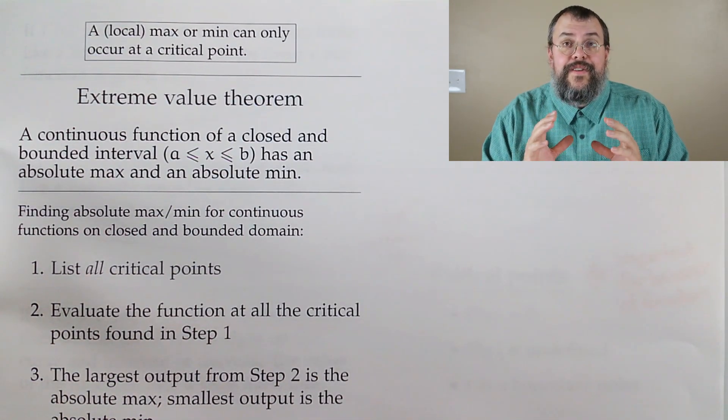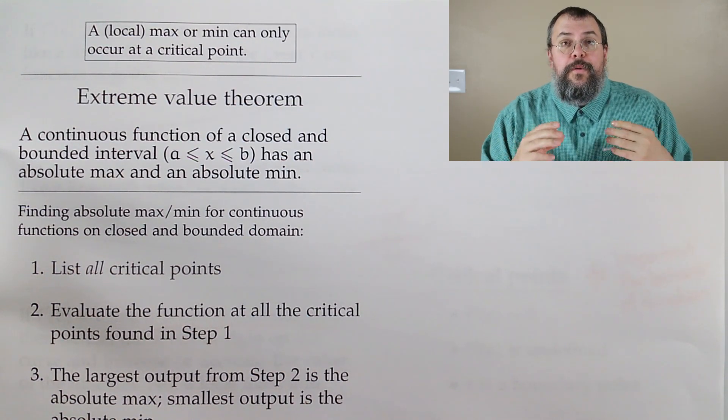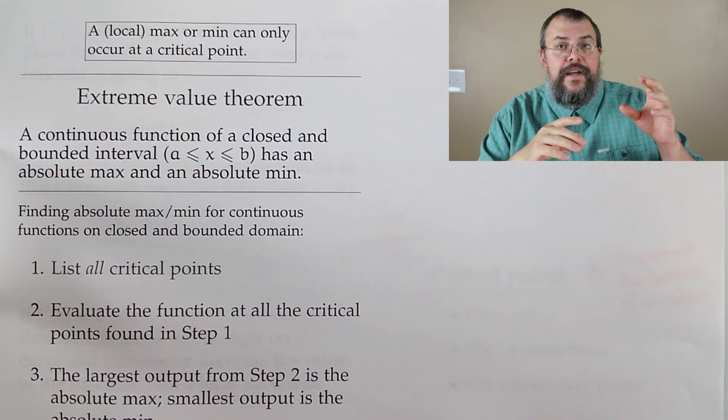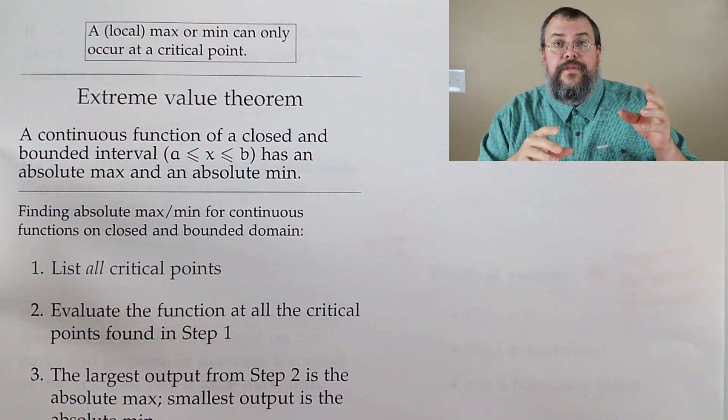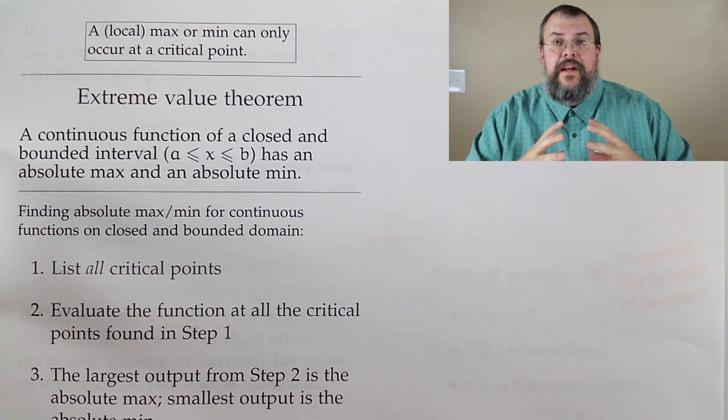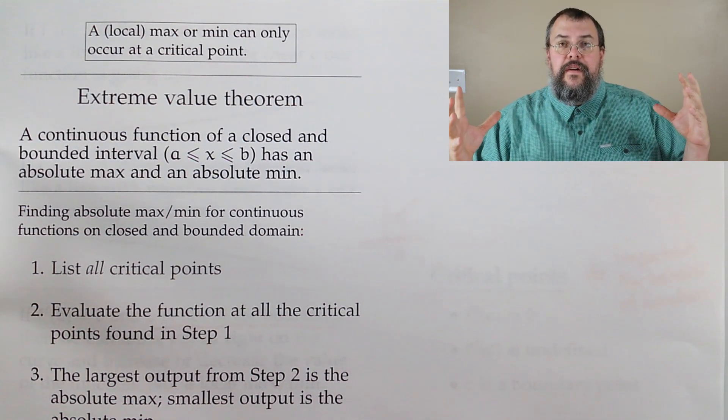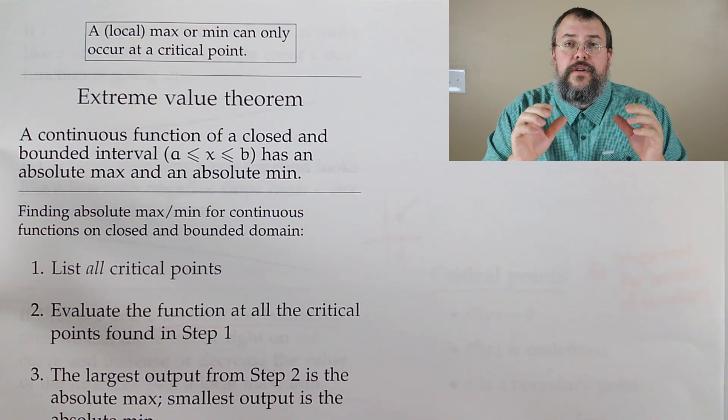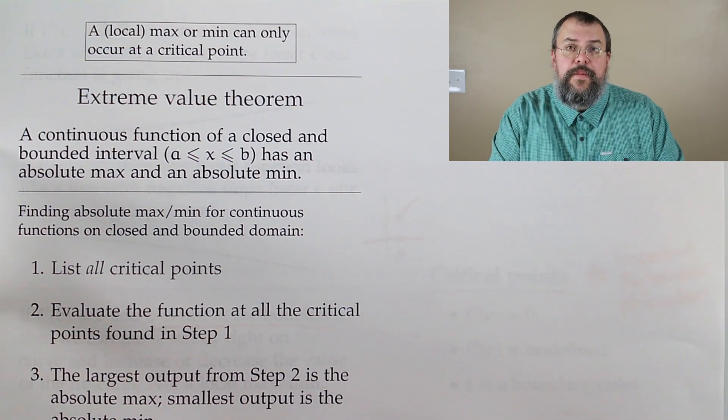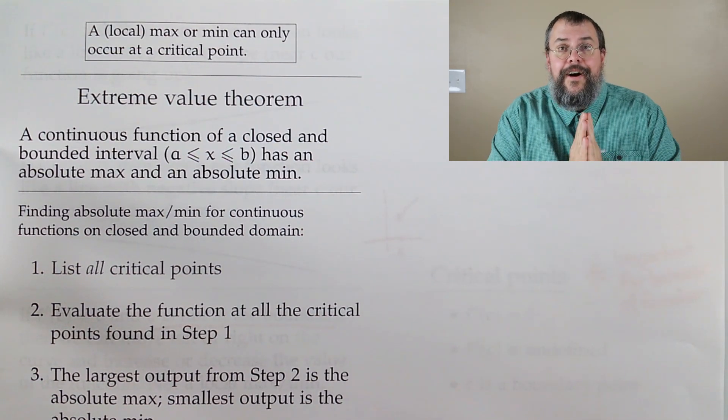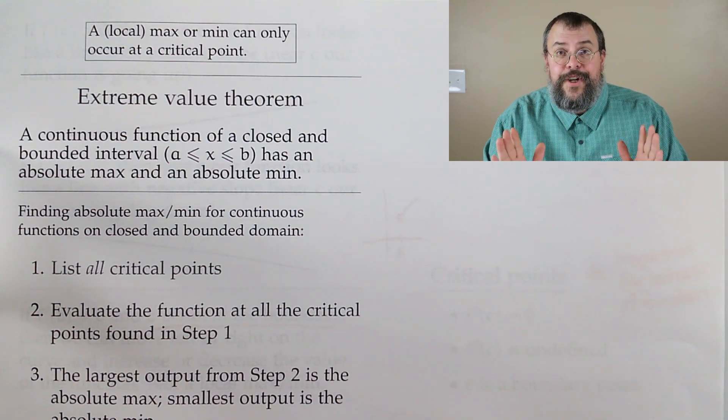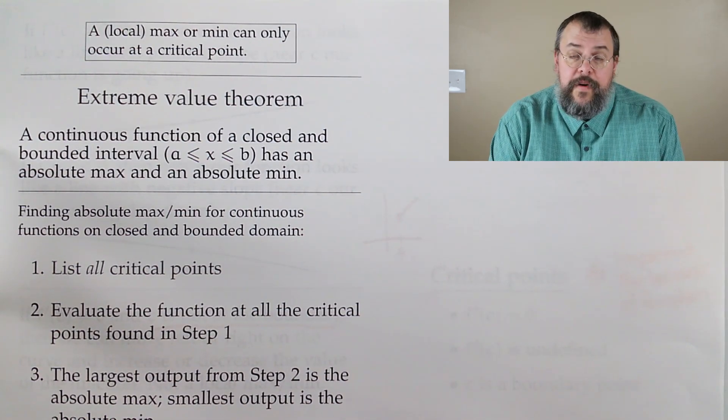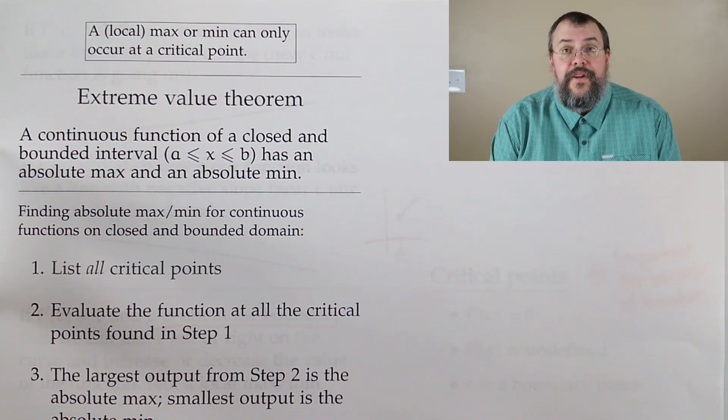We have the following simple observation, and that is a local max or min can only occur at a critical point. If I'm looking for maxes and mins, and we will be, the way we do it is we say, let's start looking for critical points. Do we have a boundary? Throw those in. Do we have any places where the derivative is undefined or the derivative is zero? Throw those in. Essentially, what we've done is instead of saying you have to check every point you can plug into your function, focus on just the handful that satisfy these potential locations, these critical points, and that will help us figure it out.